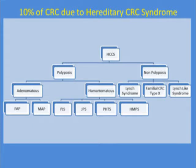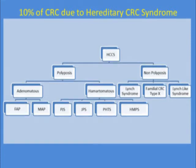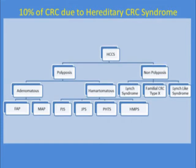There are some Lynch patients that do have numerous polyps. Within the adenomatous polyposis syndromes, I characterize them as adenomatous versus hamartomatous. The adenomatous bucket includes FAP — familial adenomatous polyposis — and MAP, MYH-associated polyposis. The hamartomatous syndromes are very uncommon, and include Peutz-Jeghers, juvenile polyposis syndrome, PTEN hamartoma tumor syndrome, and hereditary mixed polyposis syndrome.